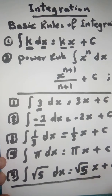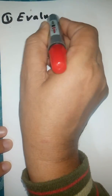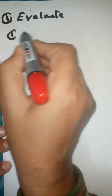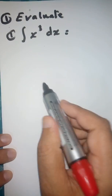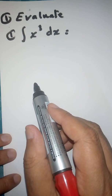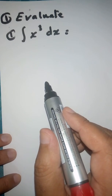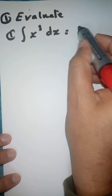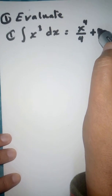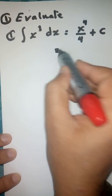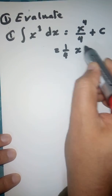Now for the second rule: the power rule. Evaluate example one. The result is (1/4)X to the power 4 plus C.